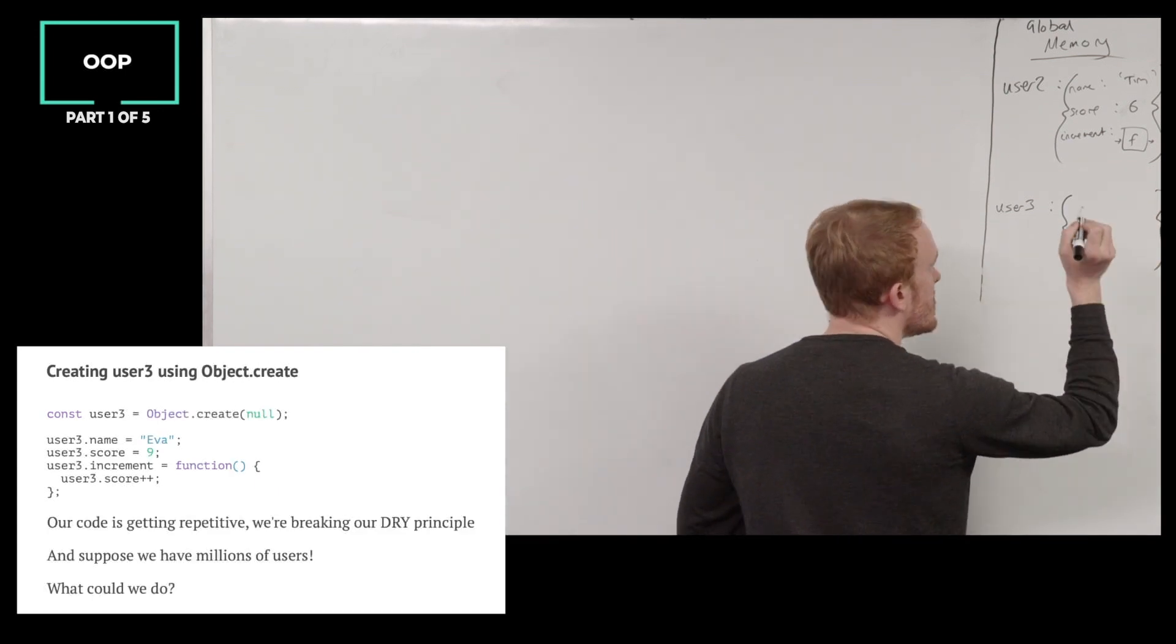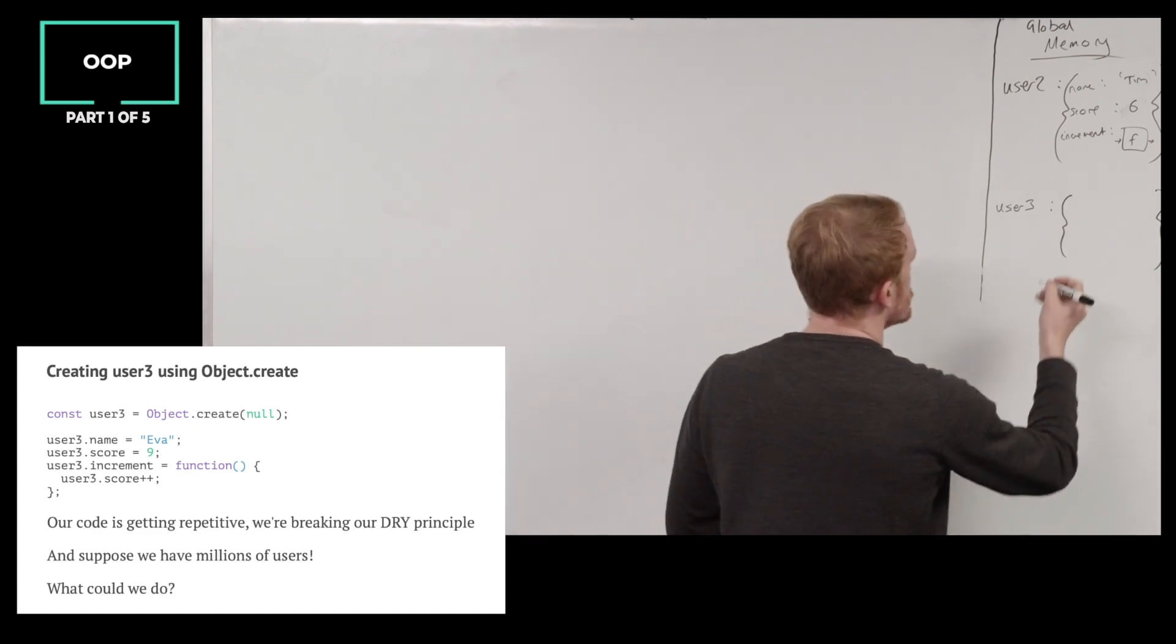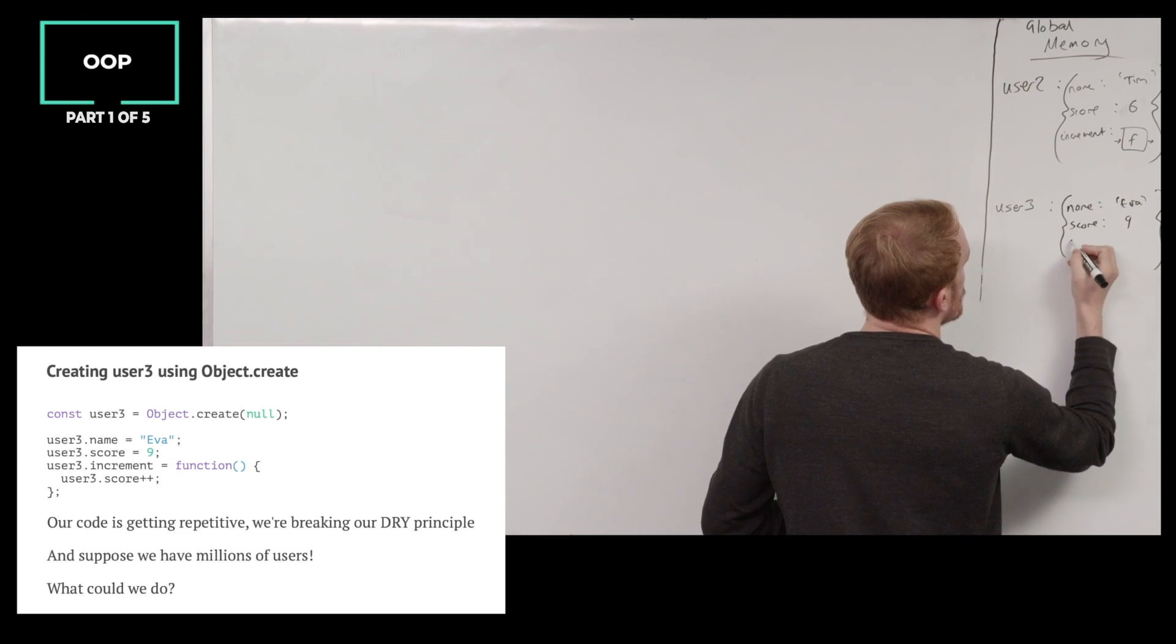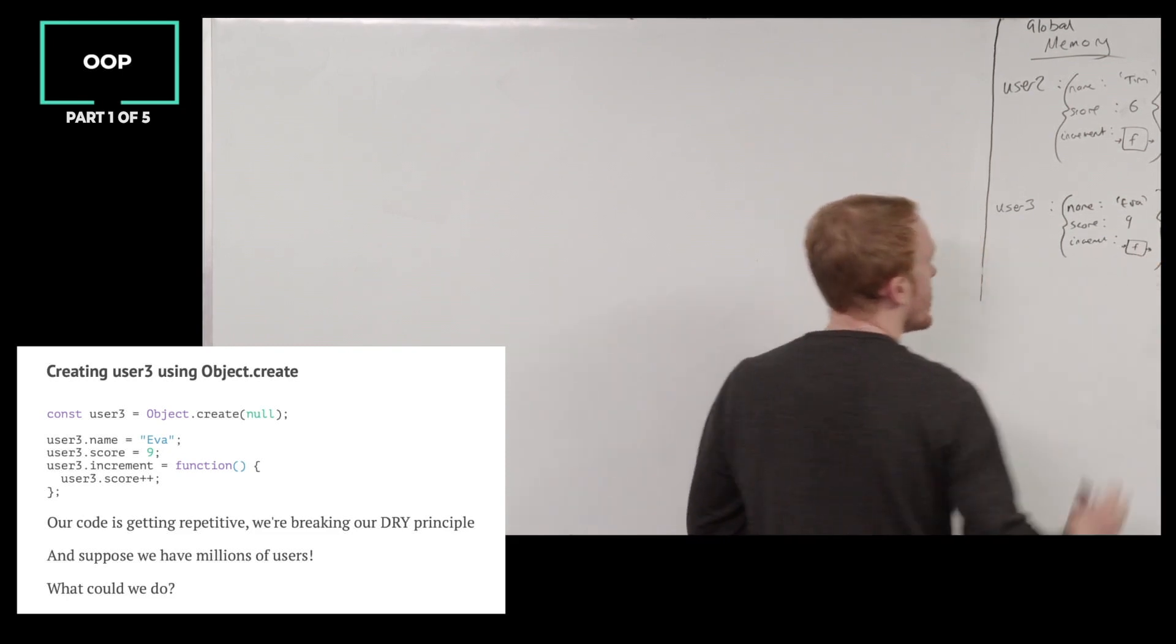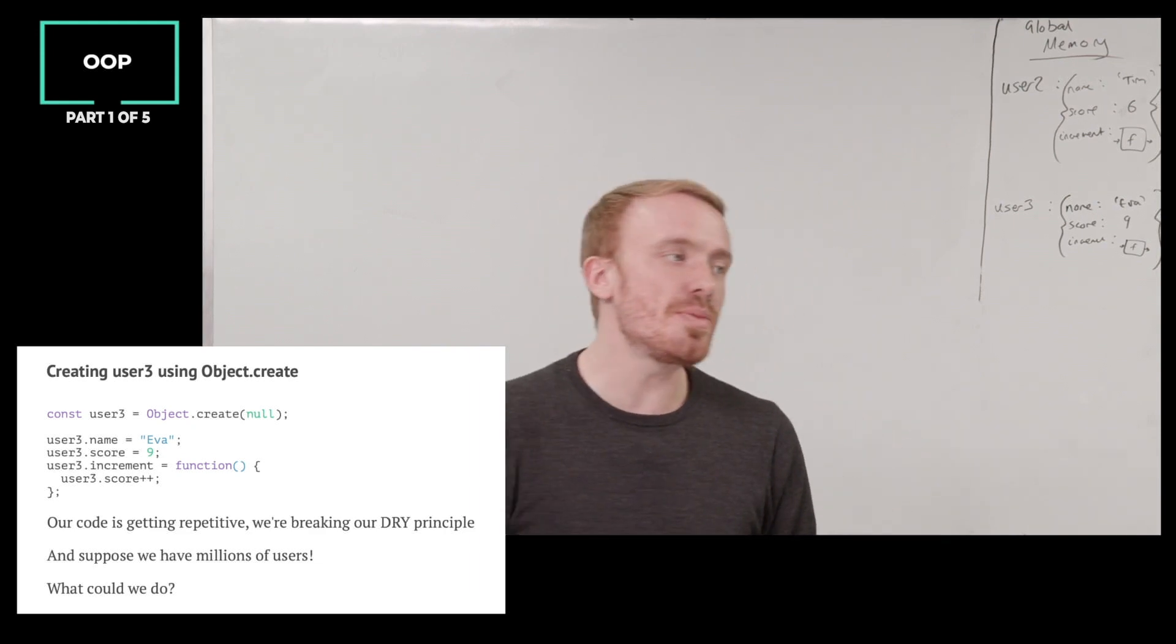User3 is an empty object. So keep talking me through it, Philip. And then we access the user3 object, creating a property name. Yep. And assigning it the string Eva. Yep. Same thing. Access the user3 object, giving it a score property, and assigning it the number 9. And then accessing the same object, giving it an increment property, and giving it a function. Yeah, so the method increment.